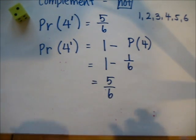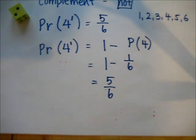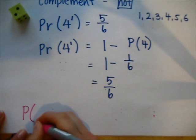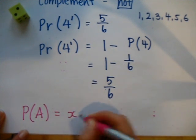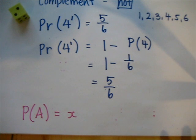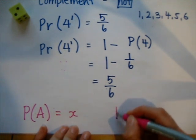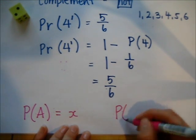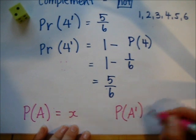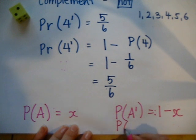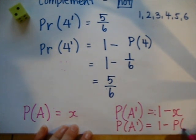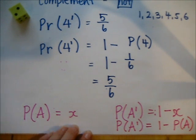The general rule for the complement is: if the probability of an event is x, then the probability of not getting the event is 1 minus x. In other words, the probability of not getting an event is 1 minus the probability of the event happening.